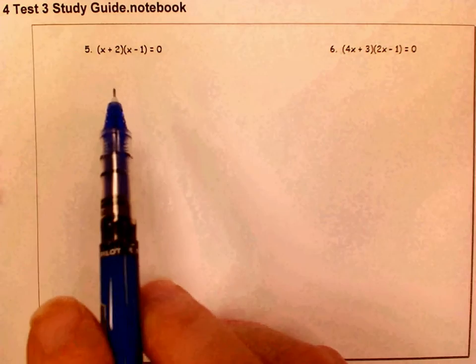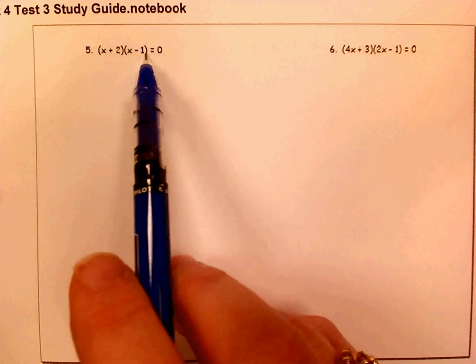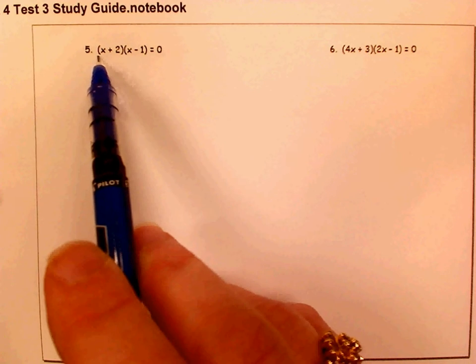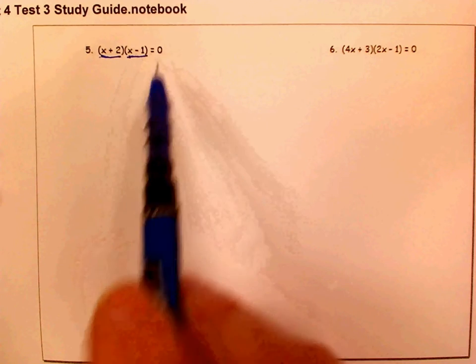So we can go ahead and tell what our solutions are. Since we have two numbers that multiply to get zero, we know that either the x plus 2 has to be zero or the x minus 1 has to be zero.